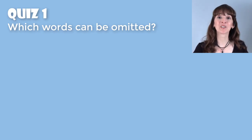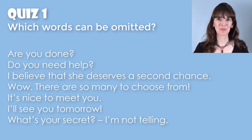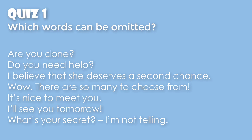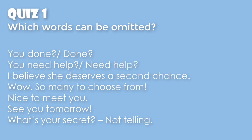Let's see how well you understand the patterns I've shown you so far. Look at all these statements — which words can be omitted? 'You done?' can become 'Done?' 'You need help?' can become 'Need help?' With ellipsis, here are the shorter versions: 'I believe she deserves a second chance.' 'Nice to meet you.' 'See you tomorrow.' 'What's your secret?' 'Not telling.' Okay, let's go on.